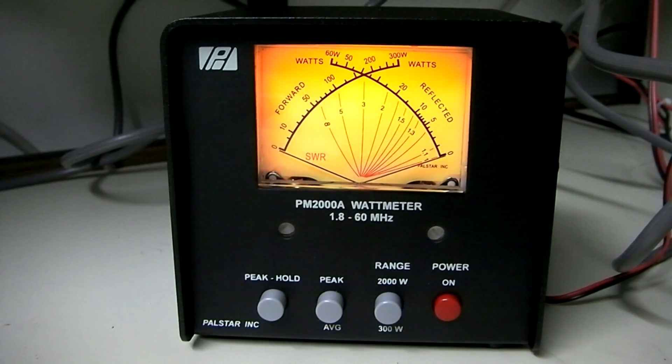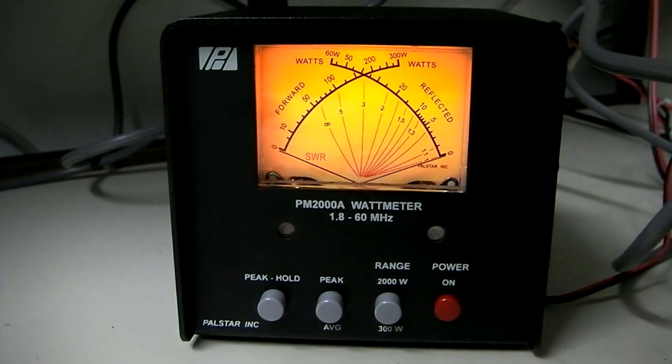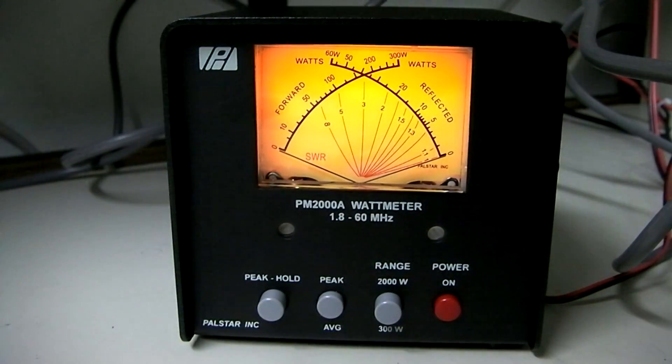So let's switch over to sideband, and we will key up in sideband and show you what this looks like when we modulate. We've turned it into peak mode now, so it should be reading our peak modulation.